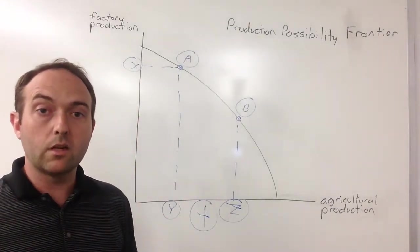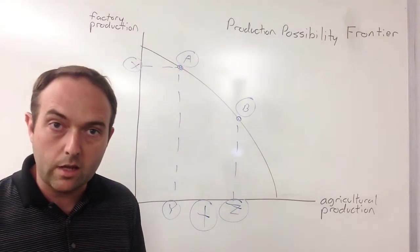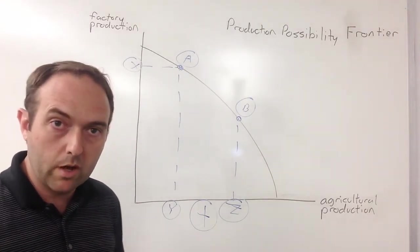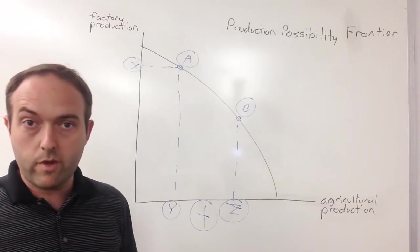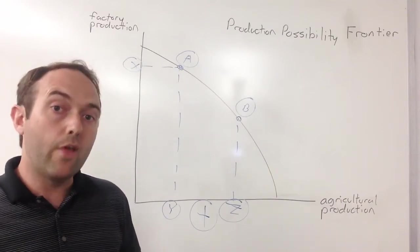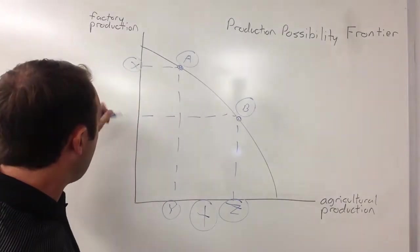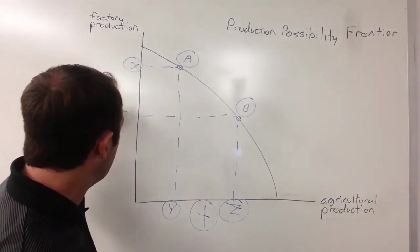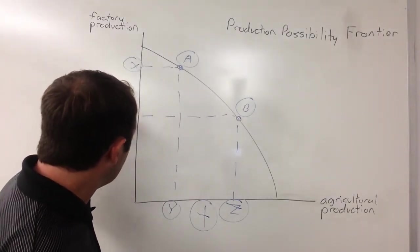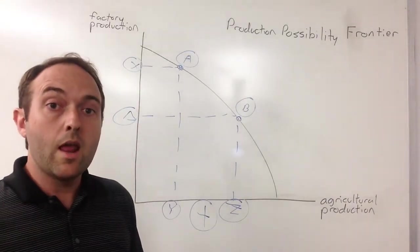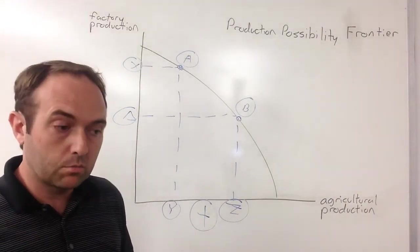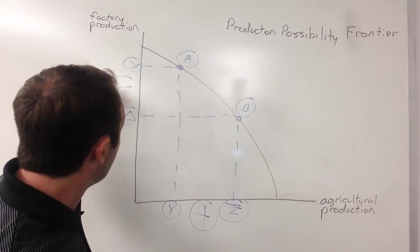But that's going to come at a cost to society. If it wants to make all those additional agricultural products, there's going to be less resources available for factory products. That, in turn, is going to be shown by this reduction, we'll call this the delta, reduction in how much factory production it's going to make. It's going to have a big reduction here.